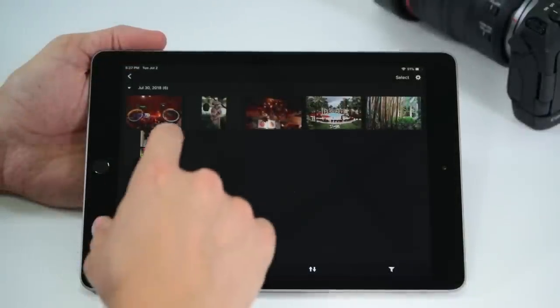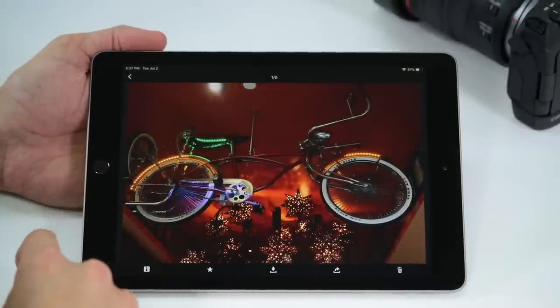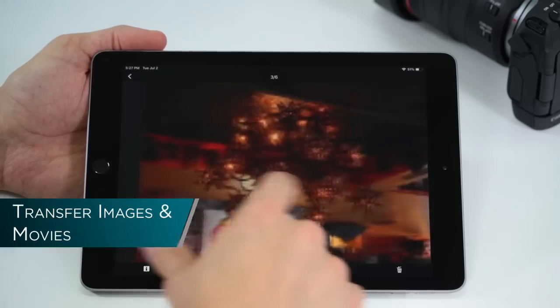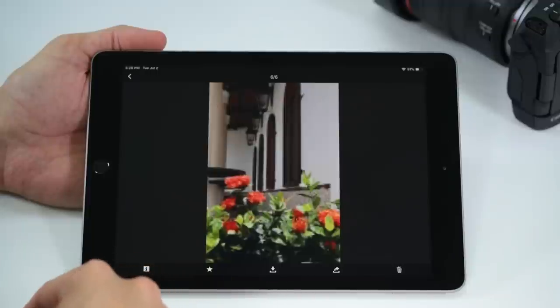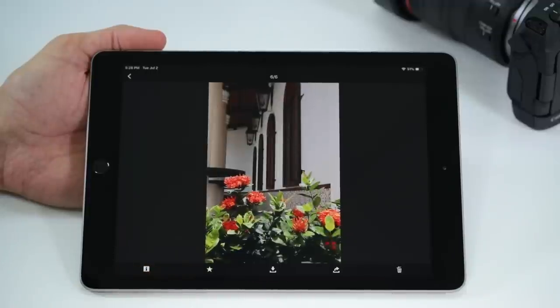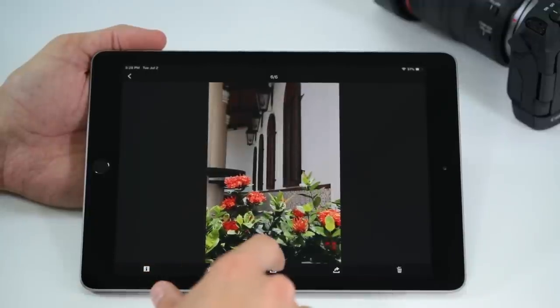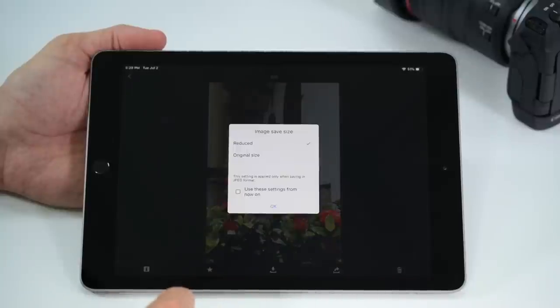One of the most convenient and popular features of the Canon Connect app is the fact that you can transfer photos and now video to your mobile device to share with family and friends wherever you are. Canon gives you the ability to choose between the original size or you can make it smaller to save space on your device.